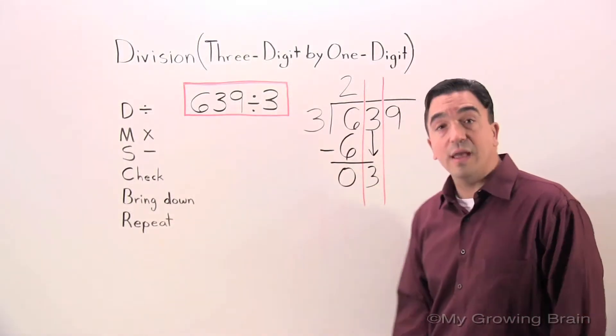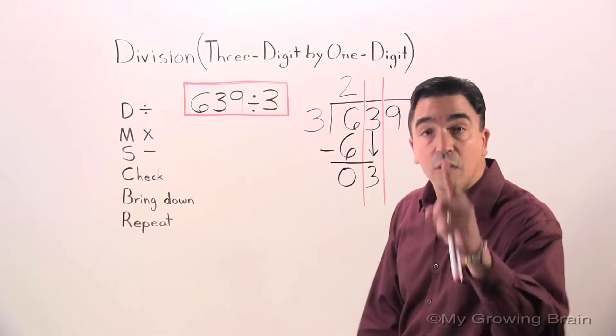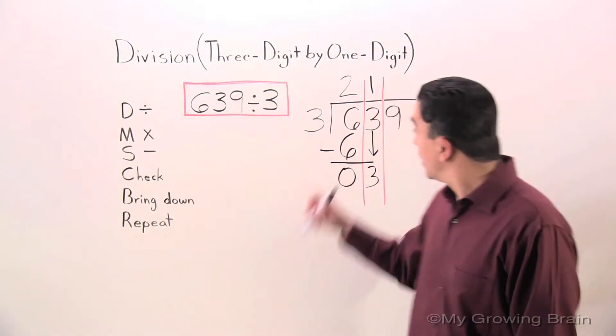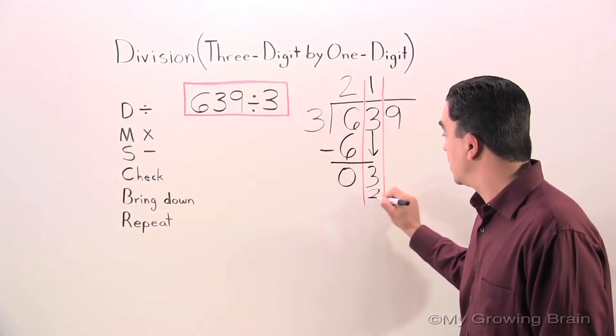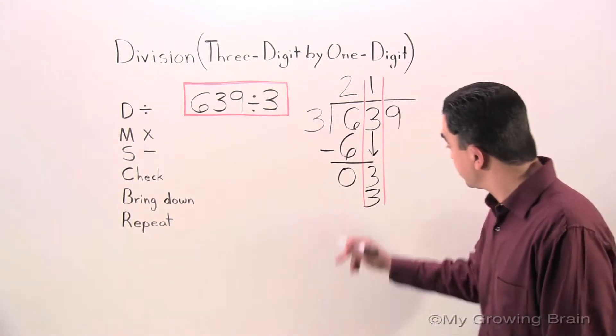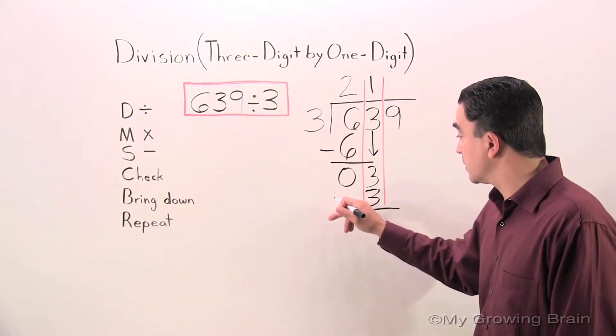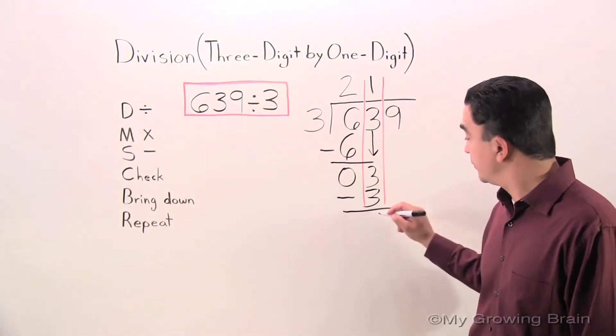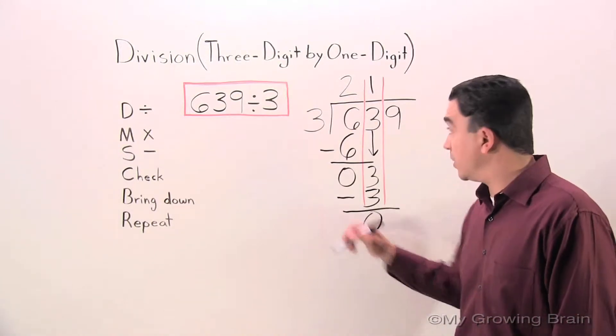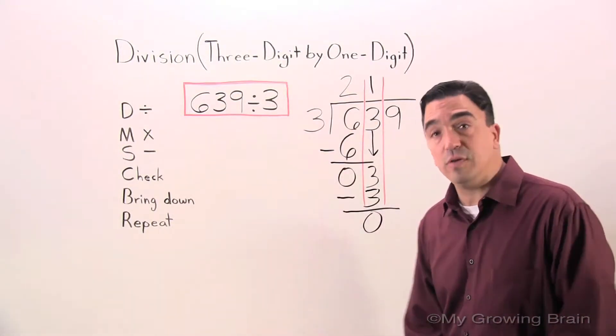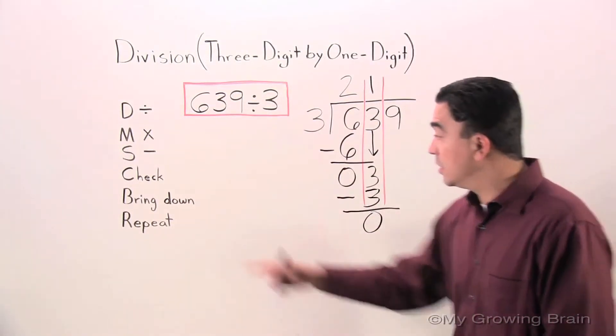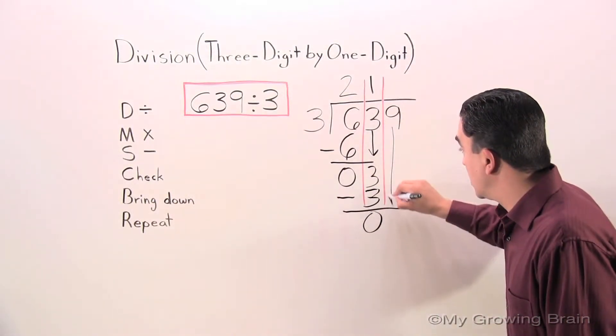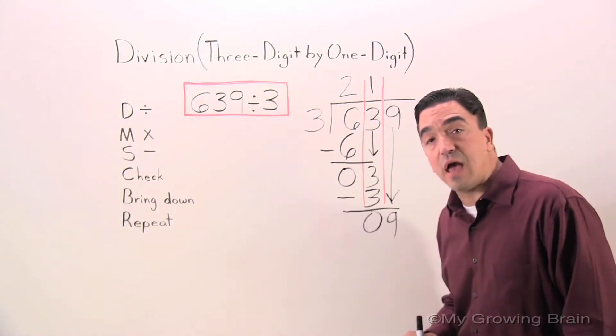Back to the top. Divide. Can 3 go into 3? Absolutely. One time. I'm going to multiply. 3 times 1? 3. Subtract. 3 minus 3, 0. Check. Is 0 less than 3? Absolutely. Move on down to the B. Bring down the number, 9.